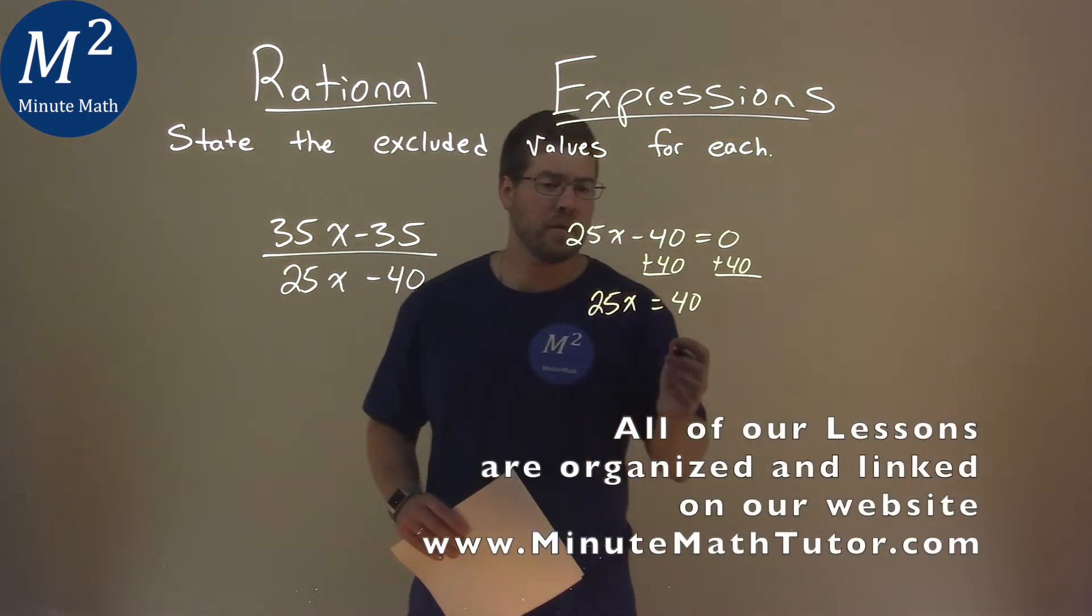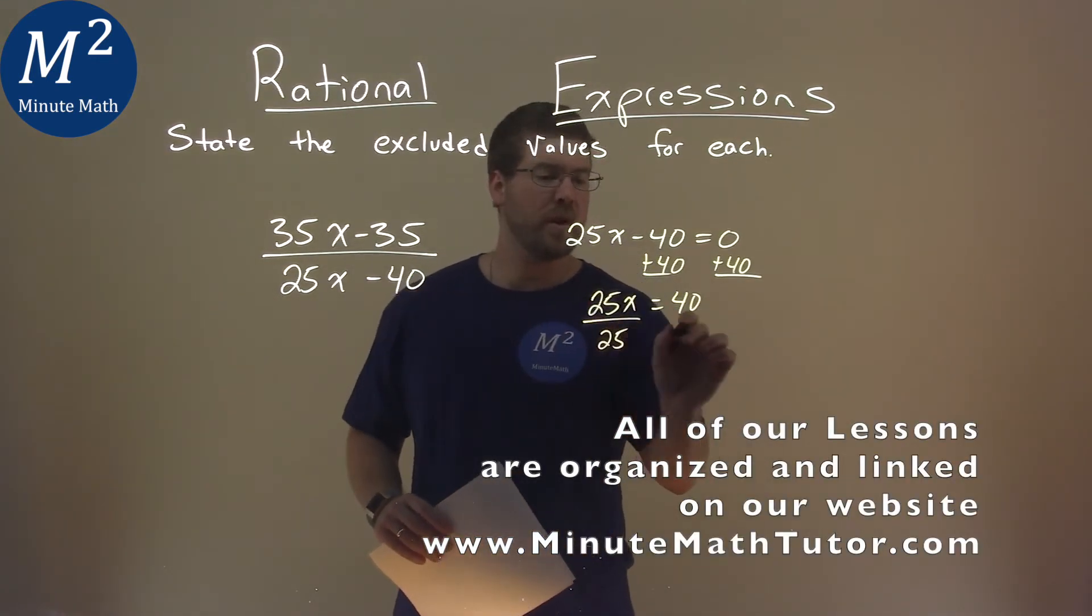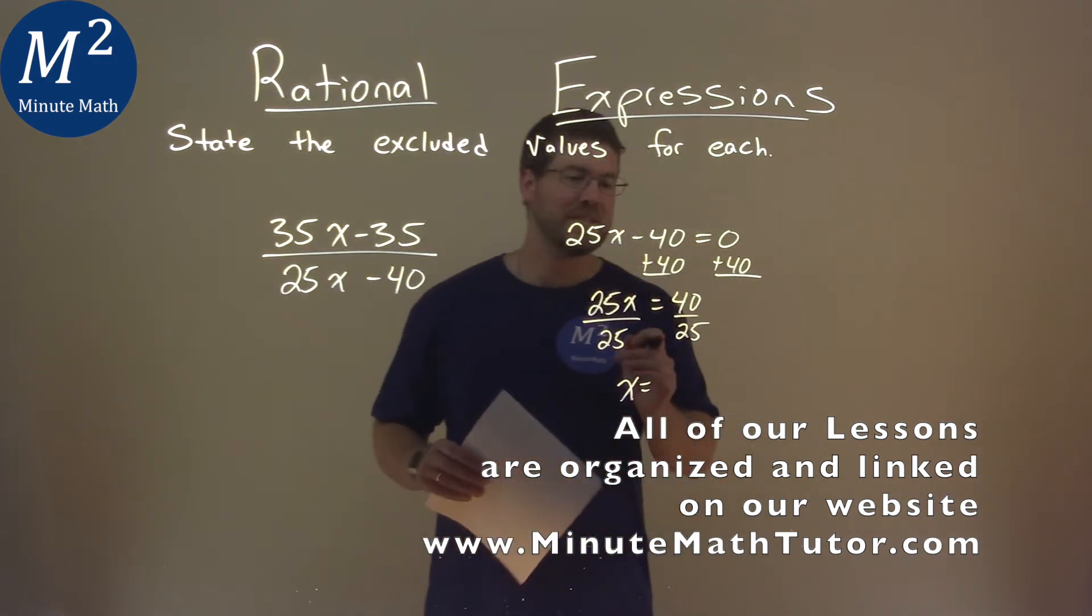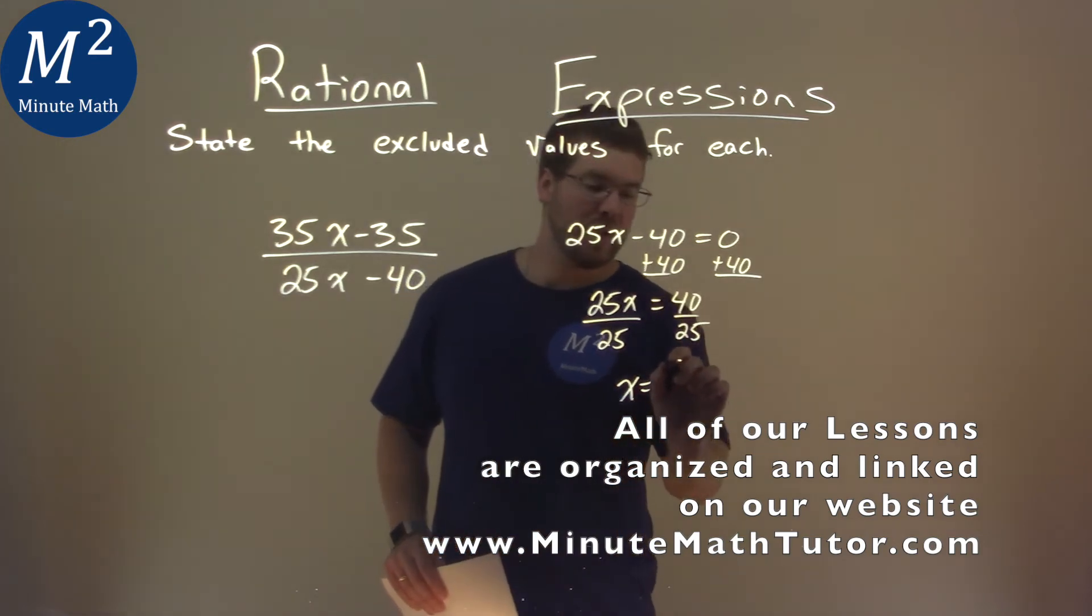Then from there, we divide both sides by a 25, and now x equals 40 divided by 25, which does simplify to an 8 fifths.